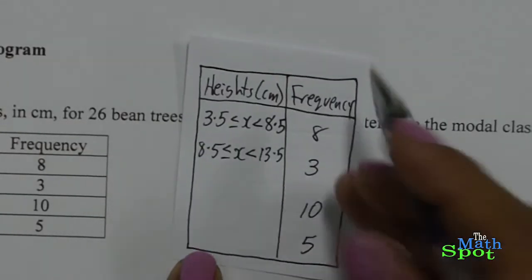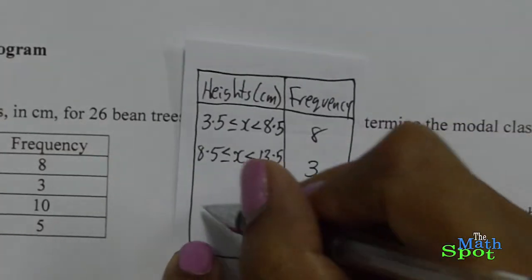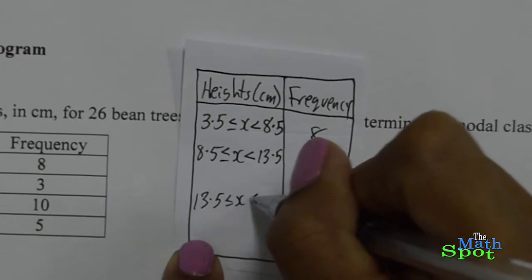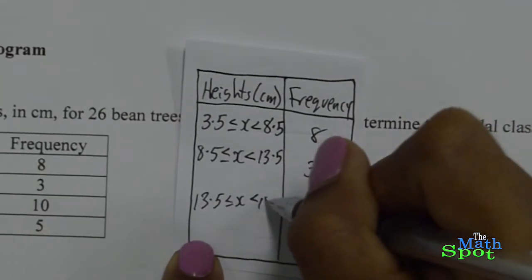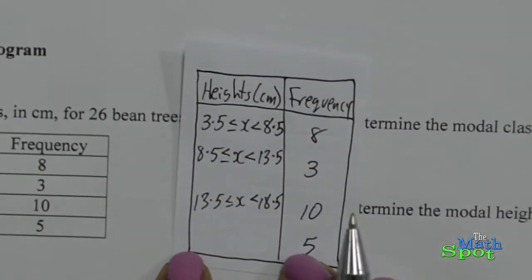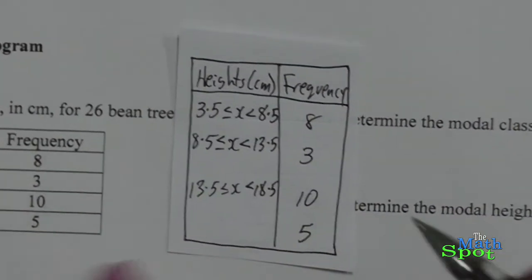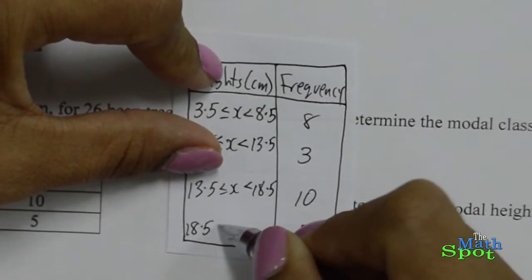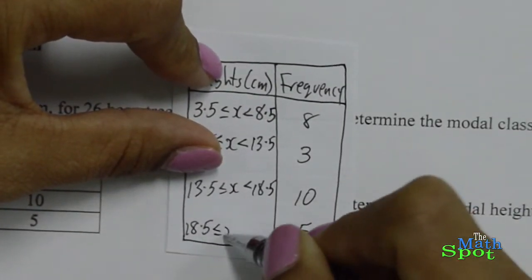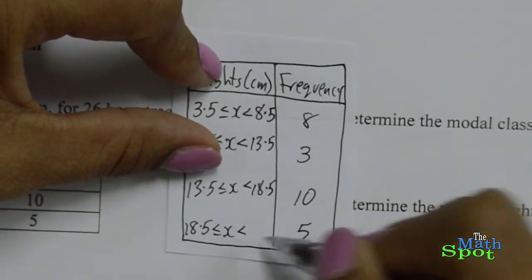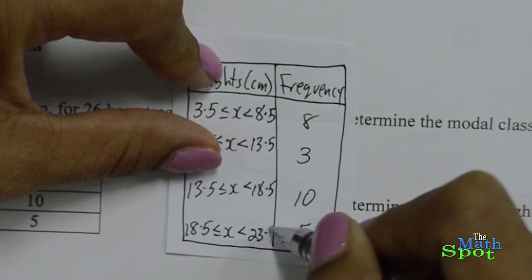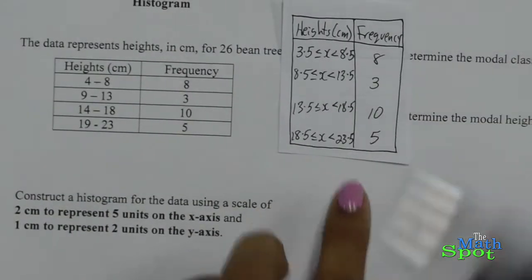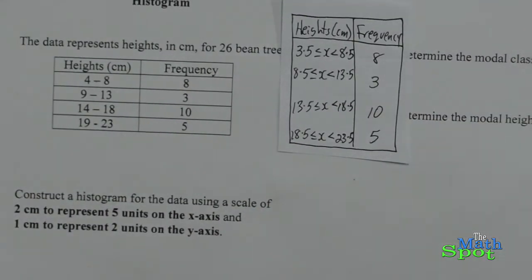For the third interval: 13.5 ≤ x < 18.5. And for the final interval: 18.5 ≤ x < 23.5. We need to remember these when we draw our histogram.